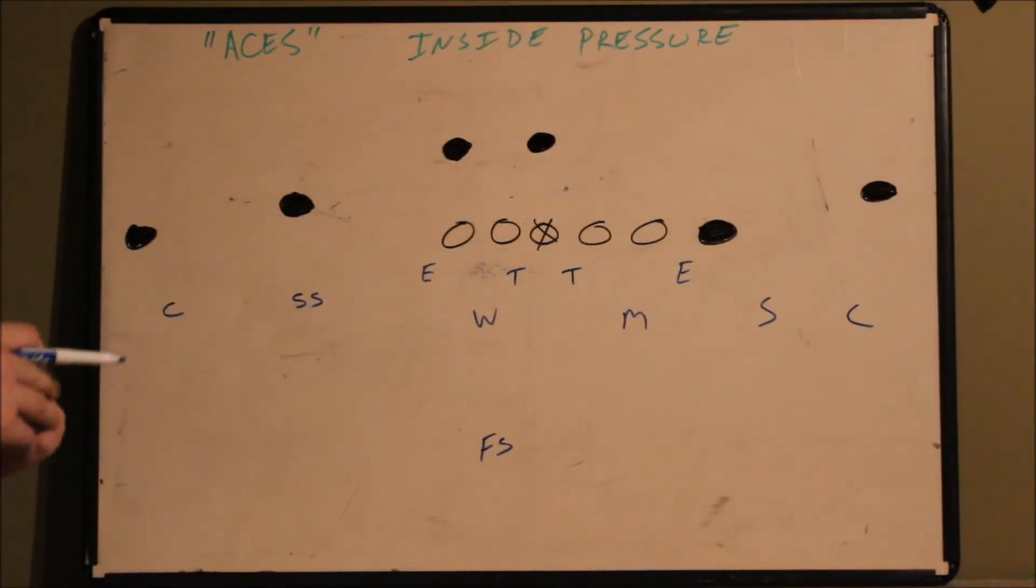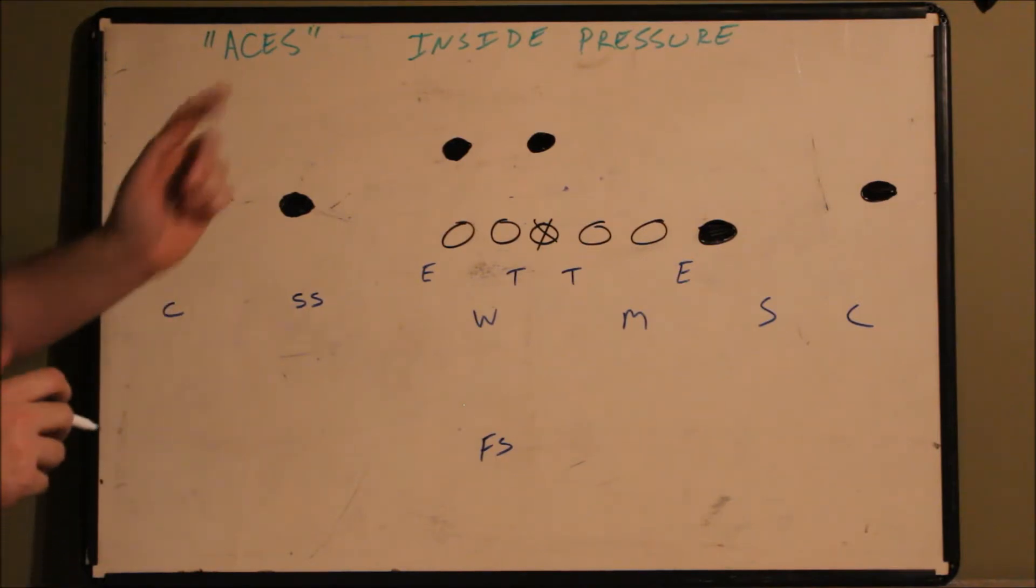This blitz is called aces. It's out of the 44 defense. This is a very good inside pressure play.